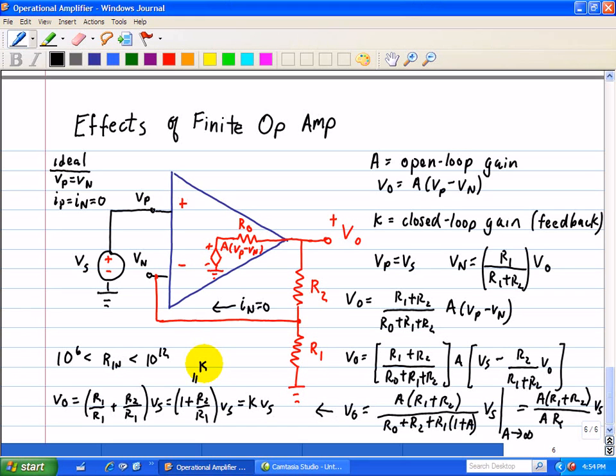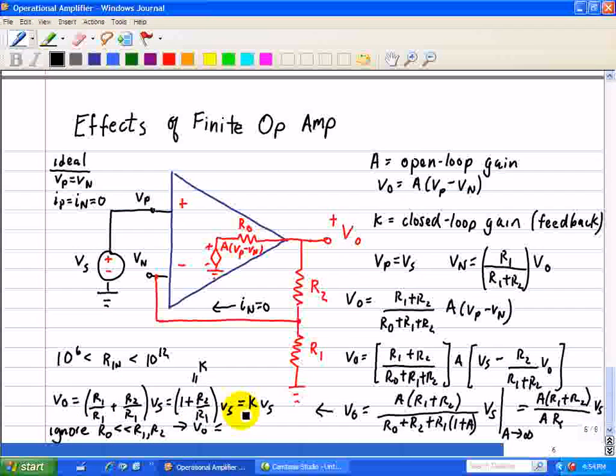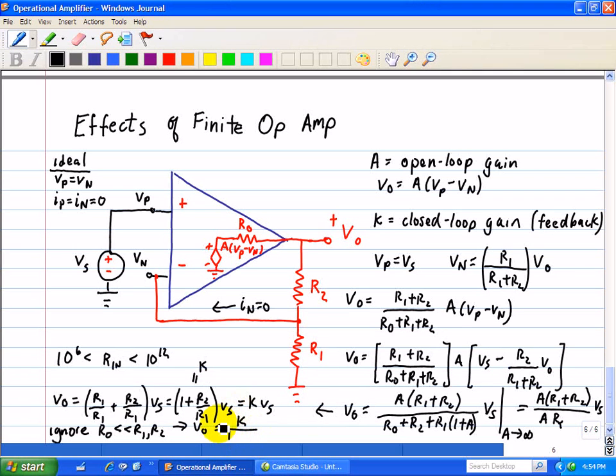Now to see the effect of A that is its finite, let's ignore RO for the moment in this equation. When we do that we know that it's generally quite small when compared with R1 plus R2. Now with this approximation when we ignore RO which is a lot smaller than R1 or R2, then this implies that VO is equal to K all over (1 plus K over A) times VS. So here we have an expression that includes the closed loop gain K and the open loop gain A.